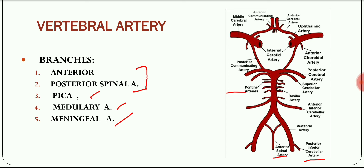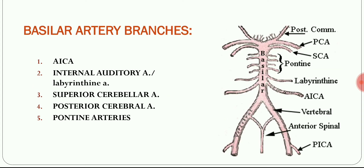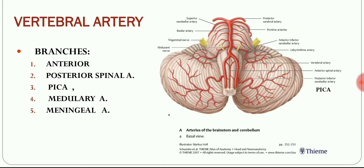Each vertebral artery gives a small branch, and these two branches join to form a single anterior spinal artery. The posterior portion of each vertebral artery gives rise to a posterior spinal artery, but they do not unite — there are two separate posterior spinal arteries. The PICA, or posterior inferior cerebellar artery, is the largest branch of the fourth part of the vertebral artery.